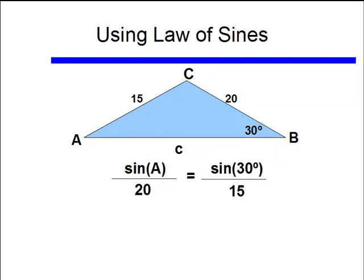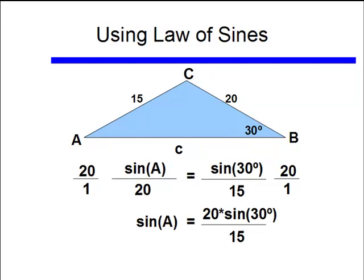I'll do that by multiplying both sides by 20, and then I find that the sine of A is equal to 20 times sine of 30 degrees all divided by 15, or that sine of A is equal to 0.6667.